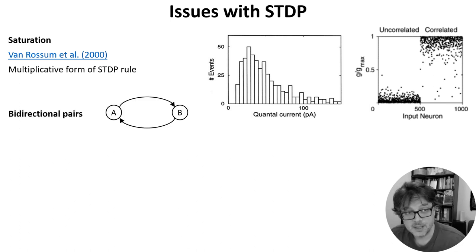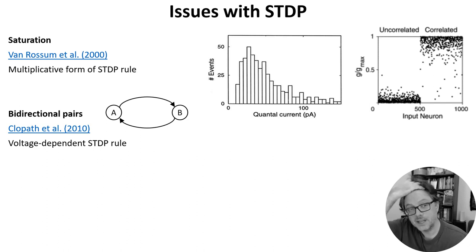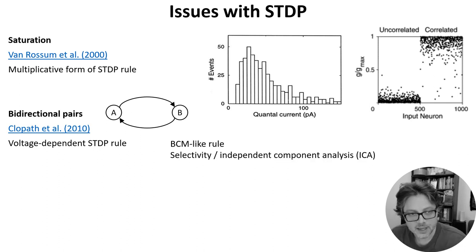Another issue is that STDP will always force synaptic connections between neurons to be unidirectional. You can't have a situation where A excites B and B excites A. However, this is really common in Cortex. Now, again, you can fix this with a more complicated STDP rule. In this case, one that takes voltage into account. And the properties of these sorts of models are still being investigated. It's structurally similar to the BCM rules we saw in the last video, and also gives rise to selectivity and something like independent component analysis.